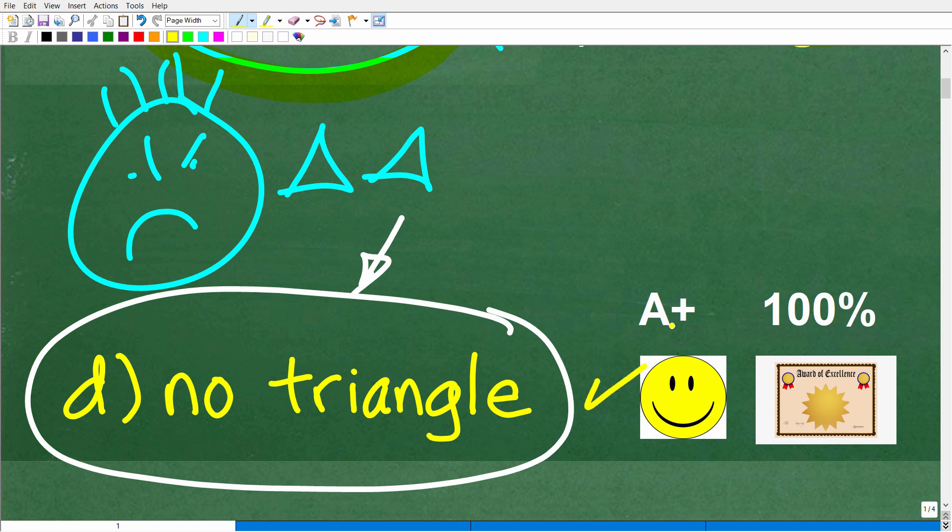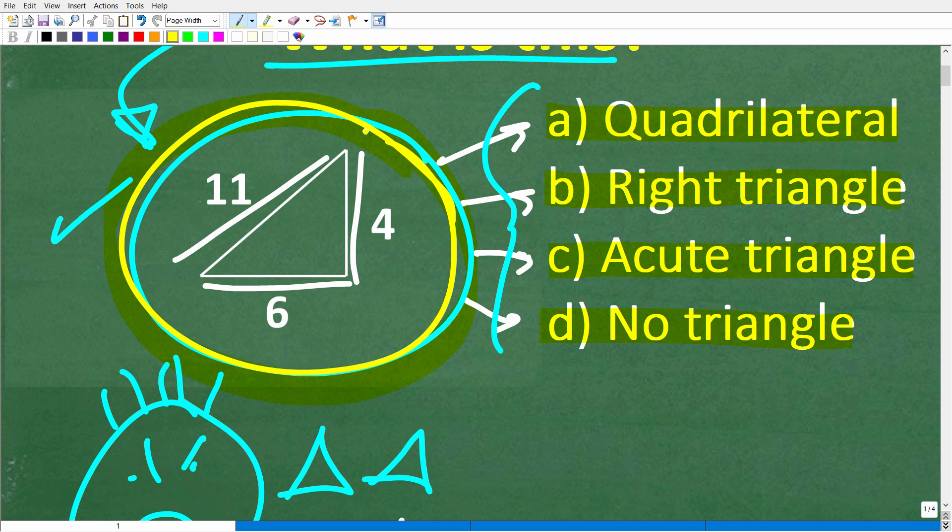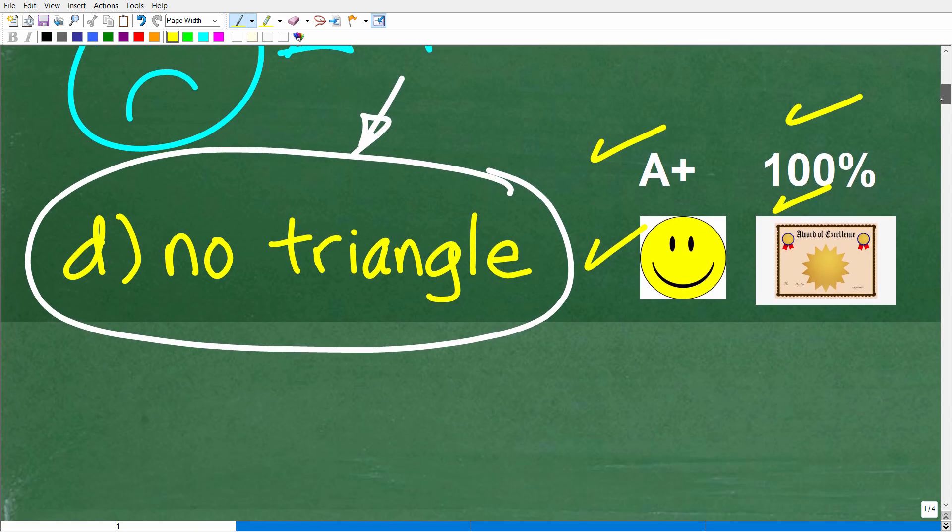But if you got this right, well, you definitely deserve a happy face, an A plus, a 100%, and a certificate of excellence because clearly you understand something called the triangle inequality theorem. What does that mean? Well, I'm gonna go ahead and explain that right now.